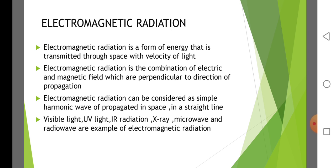Electromagnetic radiation can be considered as a simple harmonic wave propagated in space in a straight line. Visible light, ultraviolet light, infrared radiation, X-ray, microwave, and radio waves are examples of electromagnetic radiation.